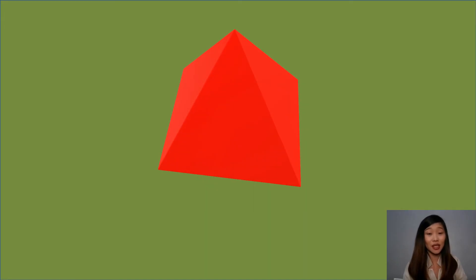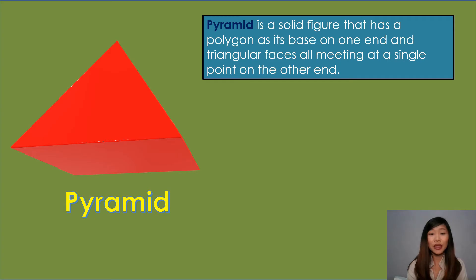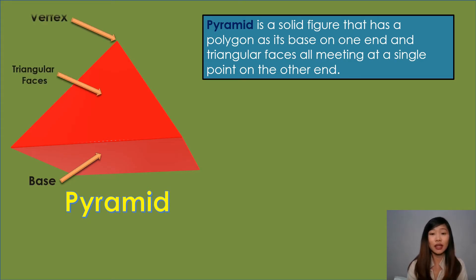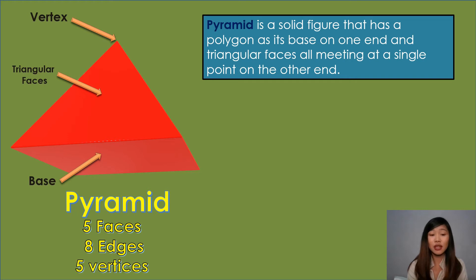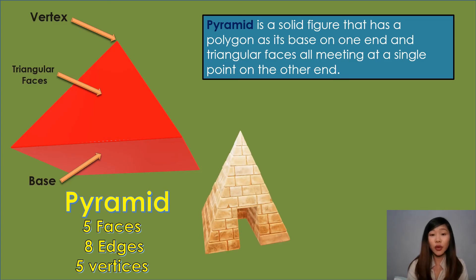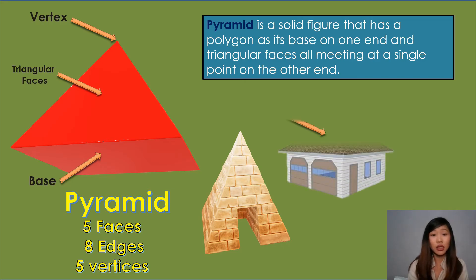I know you are familiar with this object. Can you name it? Perfect! This is a pyramid. A pyramid is a solid figure that has a polygon as its base on one end and triangular faces all meeting at a single point on the other end called the vertex. It has five faces, eight edges, and five vertices. Many of us have heard of the Great Pyramid of Egypt. Some other examples of pyramids are rooftops, certain buildings, and figurines.